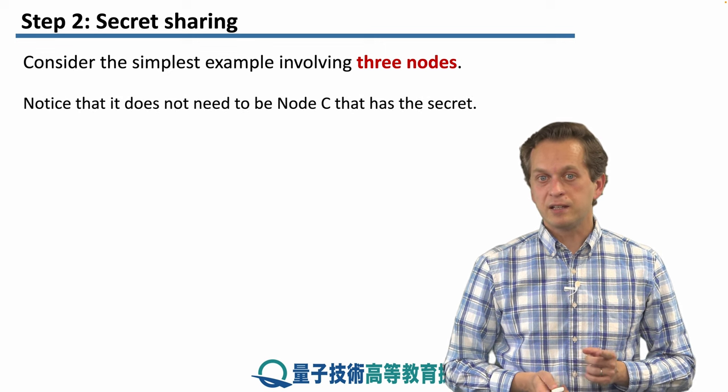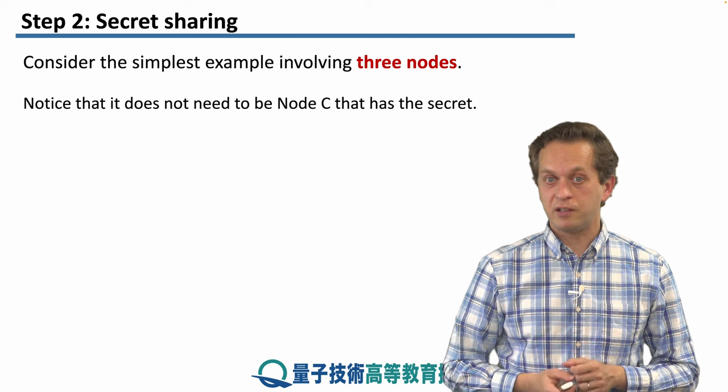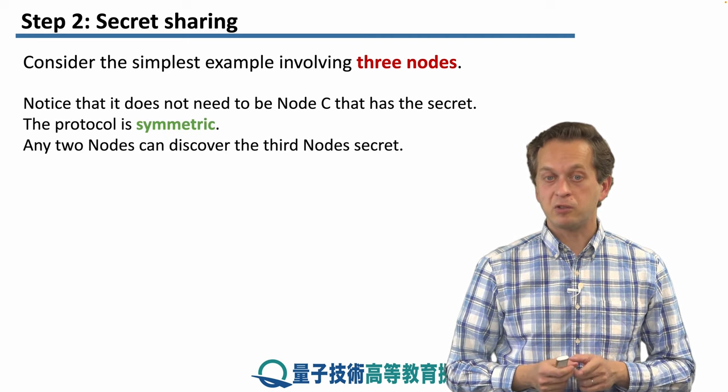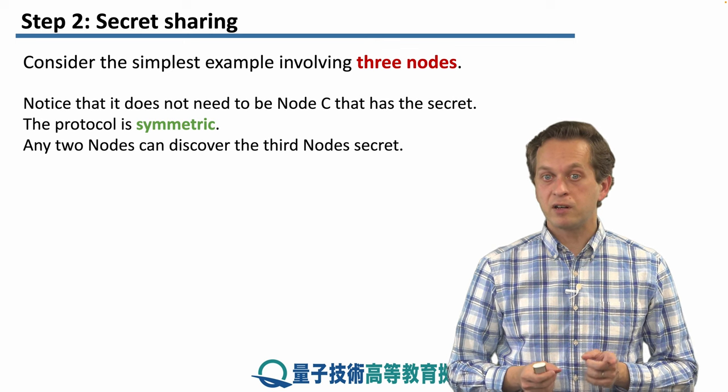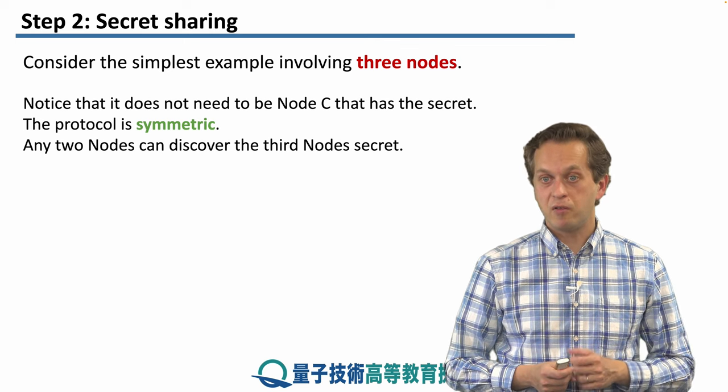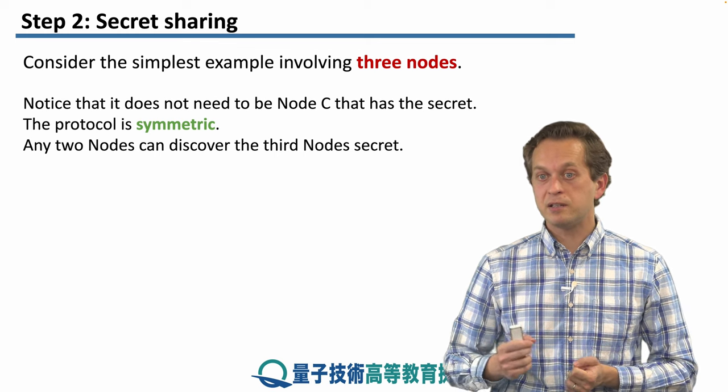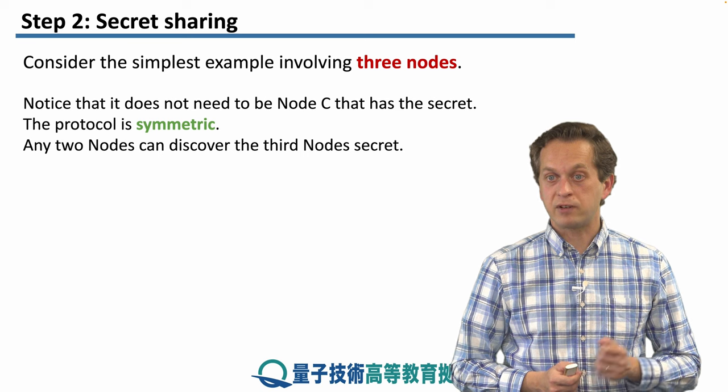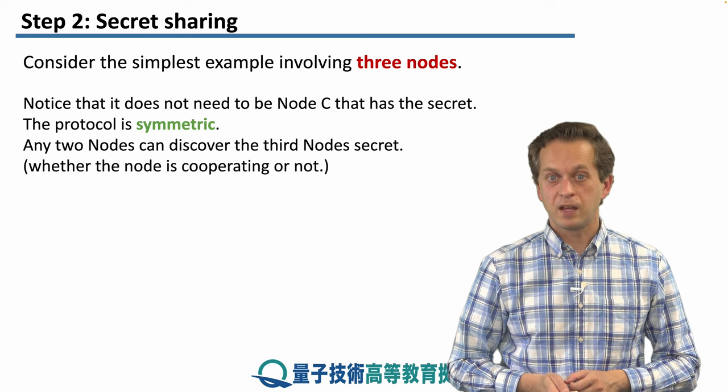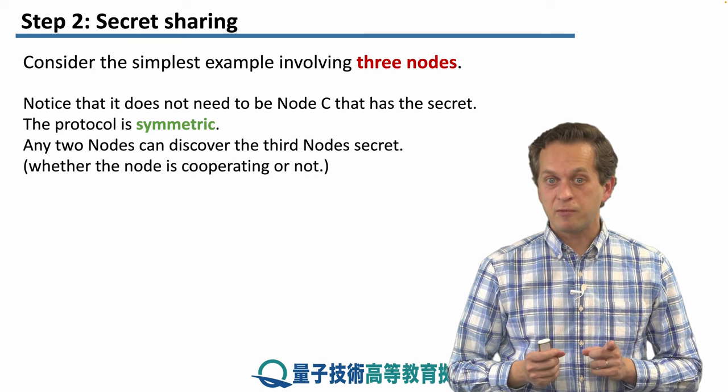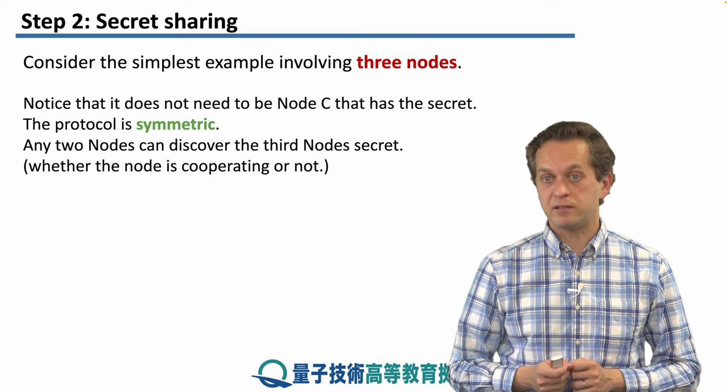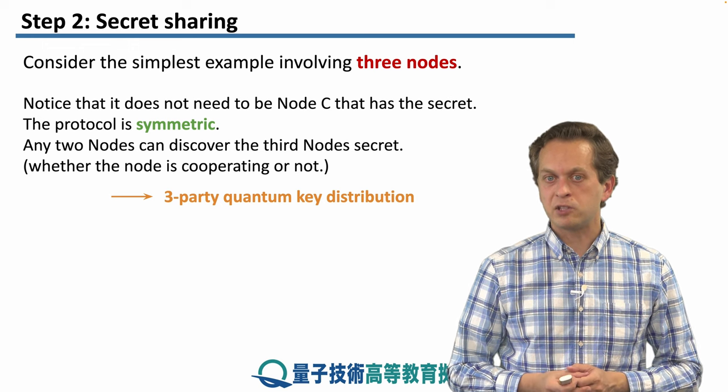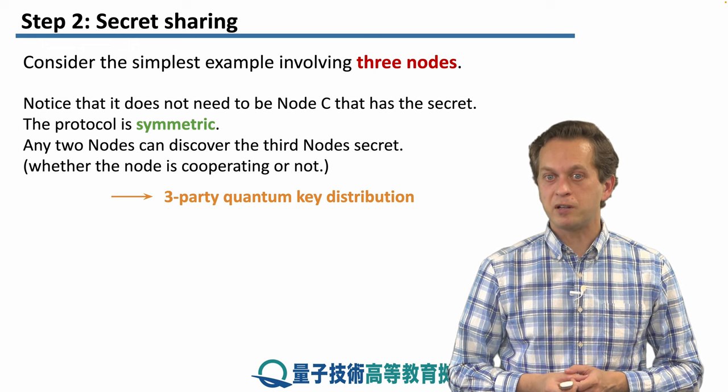So notice that c does not need to be the one generating the classical secret. The protocol is symmetric. So in fact, it could be any two nodes can discover the third node's secret. We may have picked small a as our secret, and then b and c could use their private channel in order to discover the value of that secret. And this is true whether the node cooperates or it doesn't. This is kind of like a generalization to three-party quantum key distribution.